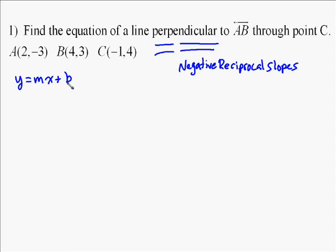What we have to do is calculate the slope by first finding the slope of the line that we're perpendicular to. In this case, we're perpendicular to AB, so we need the slope of AB. Once we do that, then we find the negative reciprocal of that, and that's the slope of the line that we're actually trying to find. Then we use point C in that slope to find our answer using y equals mx plus b.